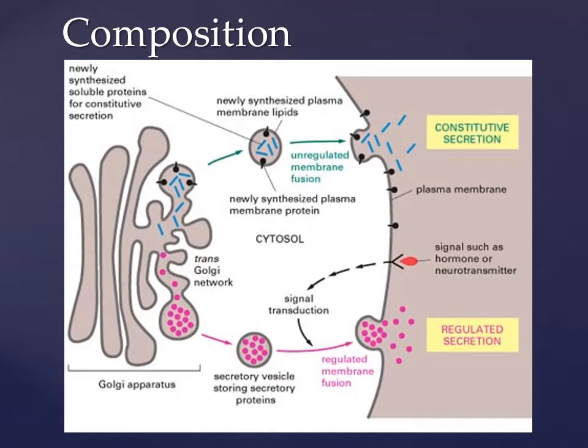Some proteins, like secretory proteins, are specifically secreted — stored in secretory vesicles and later secreted out of the cell as a result of an extracellular response from a hormone or a neurotransmitter. The pink dots on the bottom section of this diagram show the whole process of the secretory proteins being exited by a vesicle through the cell.